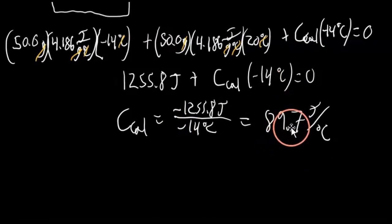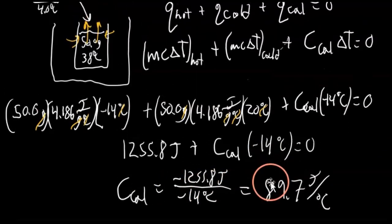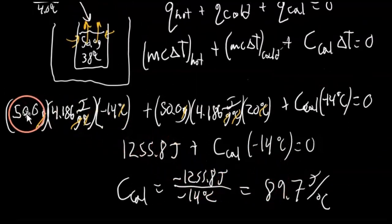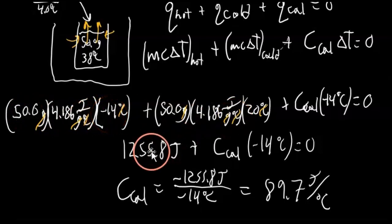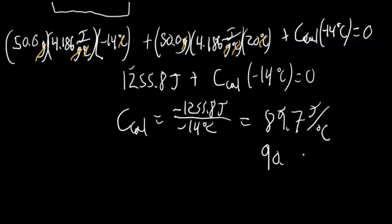We have two significant figures in our data, so rounding appropriately, the heat capacity of the calorimeter is 90 joules per degree Celsius.